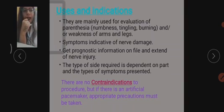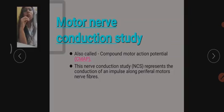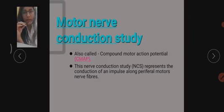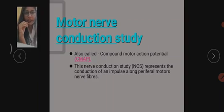Now coming to the motor nerve conduction study. The motor nerve conduction study is also known as compound motor action potential, or CMAP. A motor nerve is a nerve which conducts impulses from the spinal cord or brain to the muscle. The spinal cord or brain signals the muscle to perform an action, which is known as the motor role of the nerve.